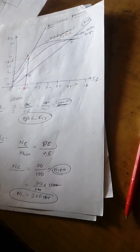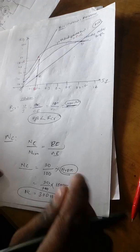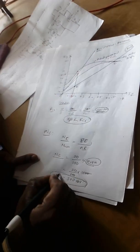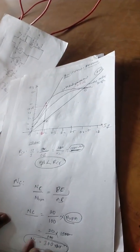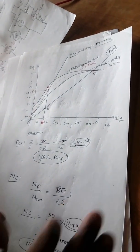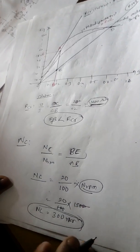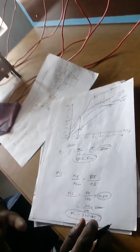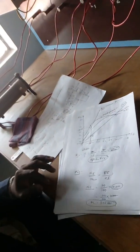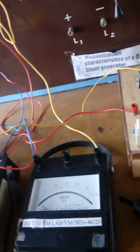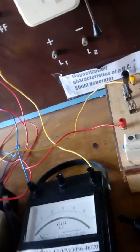This is the example calculation. To generate the generator voltage, a minimum of 300 RPM is required — the generator has to be rotated at more than 300 RPM. That is what we need to understand. This is the calculation we have done.